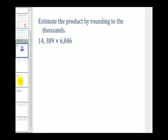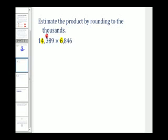Let's take a look at another example. Here we want to round to the nearest thousands to approximate this product. We have a four in the thousands place in the first number and a six in the thousands place in the second. The digit to the right of the four is three, which means we round that number down. The digit to the right of the six is eight, so we round that one up. We'll round the first number to 14,000 and the second to 7,000.